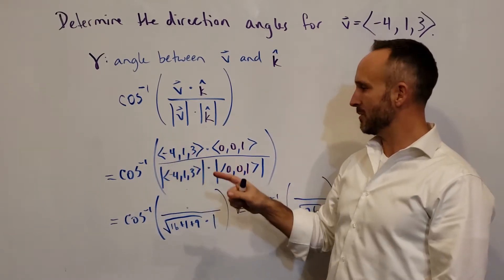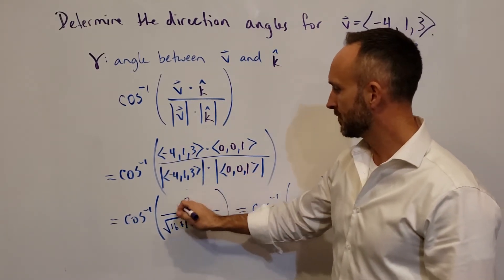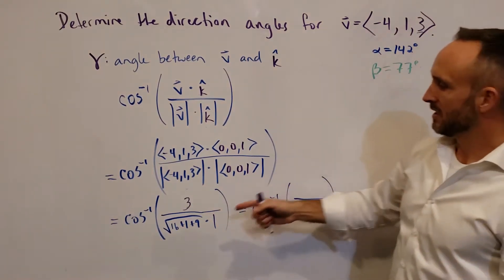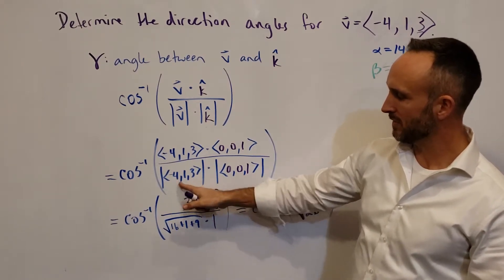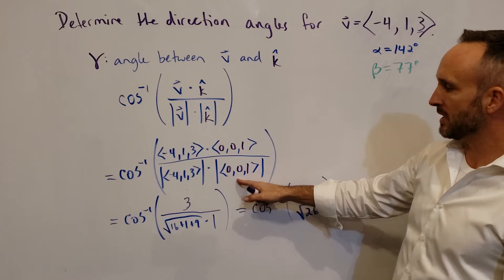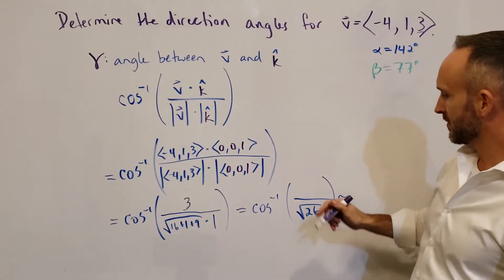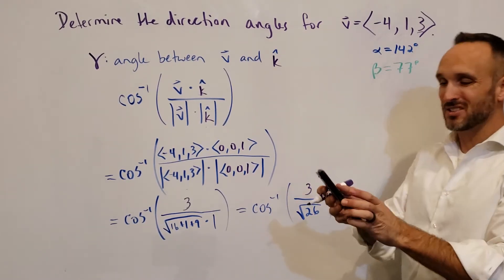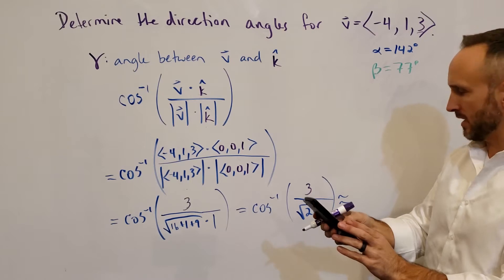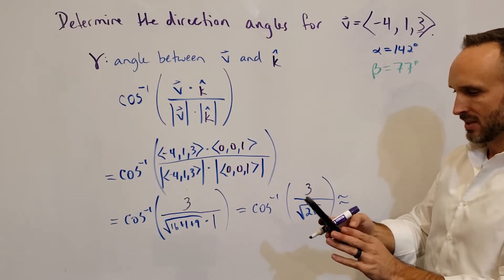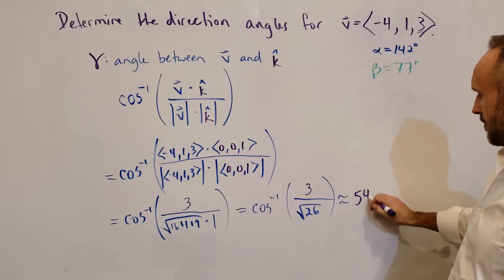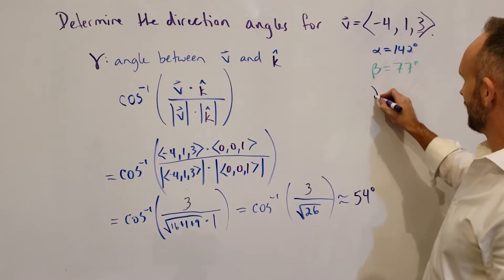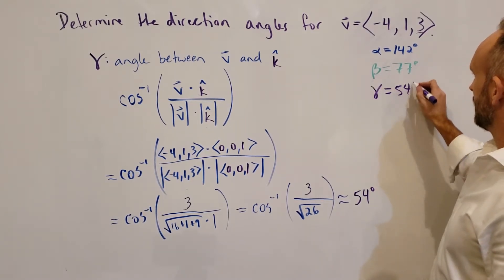When I take the dot product of v with (0, 0, 1), the negative 4 and 1 turn to zeros, and 3 times 1 is 3. So the numerator for gamma is just the z component of v, which is 3. The denominator is still the same — magnitude of v unchanged, and the magnitude of k-hat is 1. So we get cosine inverse of 3 over the square root of 26, which gives us about 54 degrees. So gamma is 54 degrees.